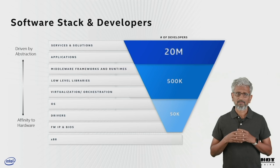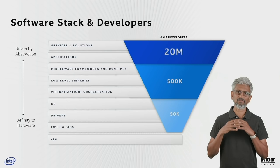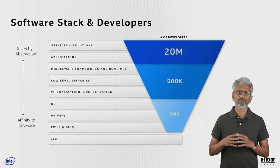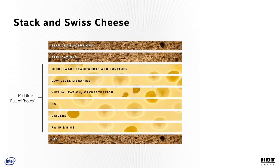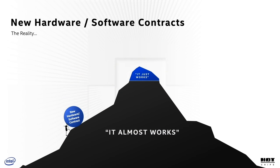If we double-click a little, we can see the density of developers at each level of the stack — an important data point we'll come back to. Now, simple software stack block diagrams give you an illusion of robust abstractions. But in reality, the abstractions are very leaky — more like Swiss cheese. The ISA and other low-level hardware dependencies percolate through the entire stack in annoying ways and take years to clean up when you attempt to break the hardware-software contract at the bottom.